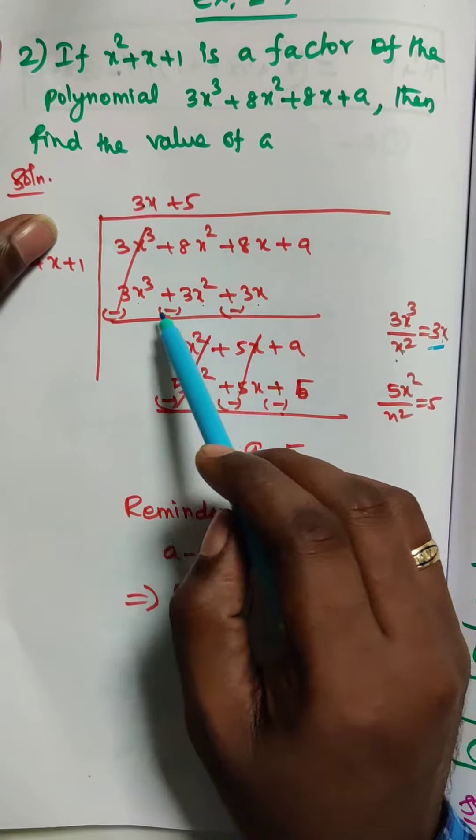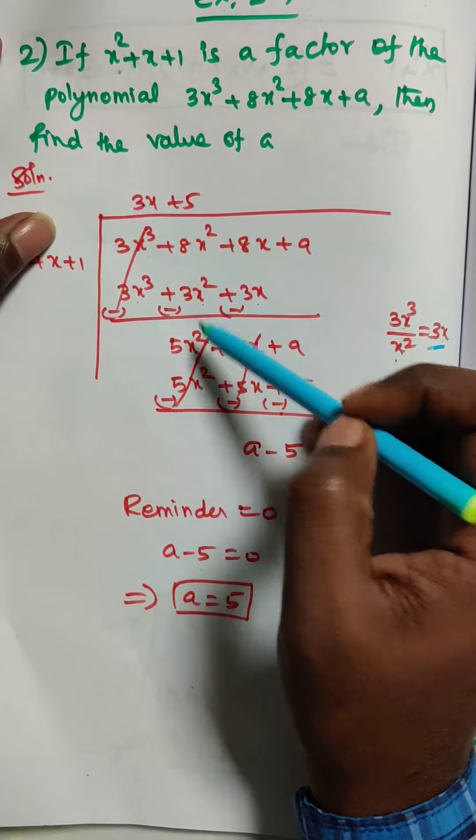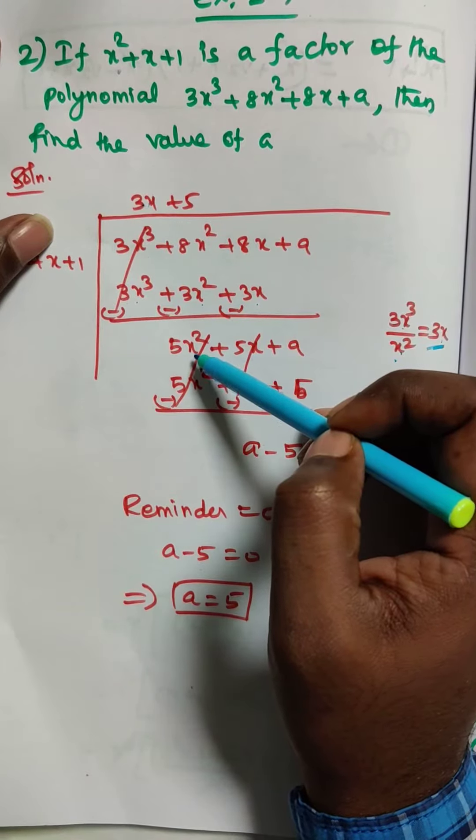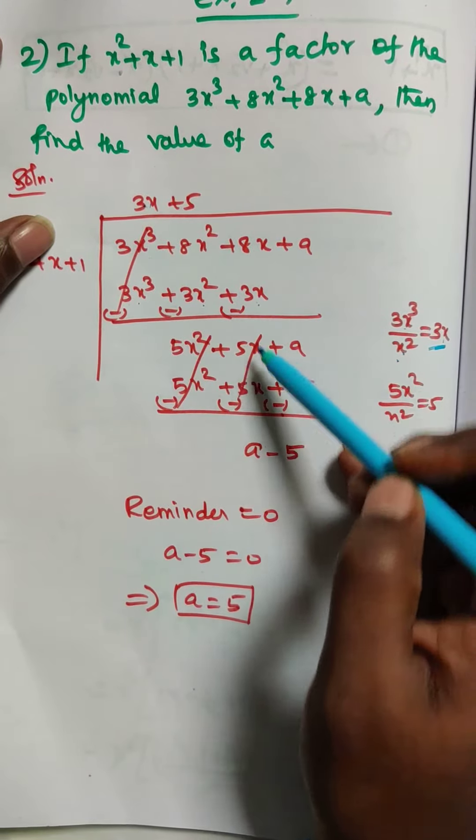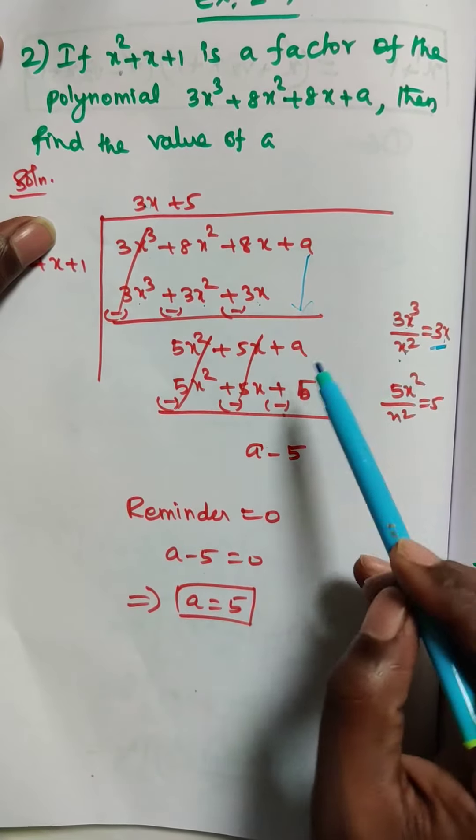So negative, here negative, here also negative. Positive and negative get cancelled. 8x² minus 3x² equals 5x². 8x minus 3x equals 5x. And a, we get a.